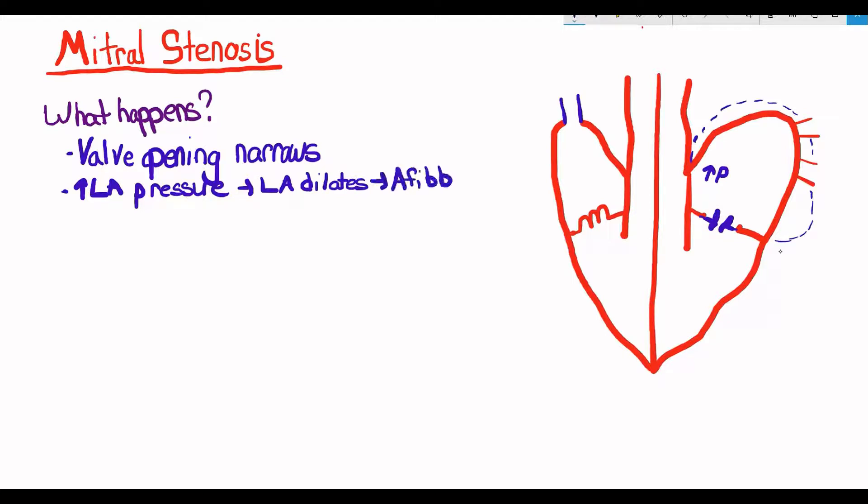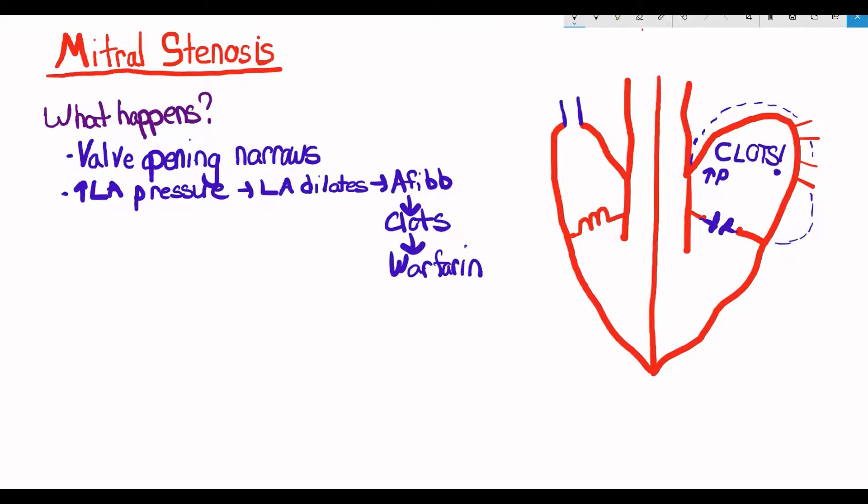Atrial fibrillation causes clots to form and they'll treat that with an anticoagulant like warfarin. The increased atrial pressure causes an increase in the pulmonary artery pressure because your blood is just backing up.